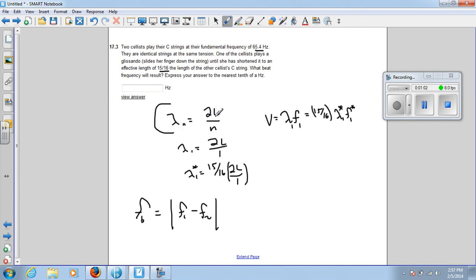we know this equation: lambda n equals 2L over n. Since it's the fundamental frequency when you just pluck it, n equals 1, so lambda 1 equals 2L over 1. Let's just say this is true for the first cellist who's still playing this.